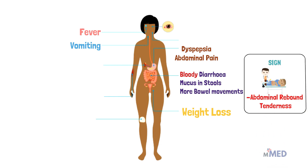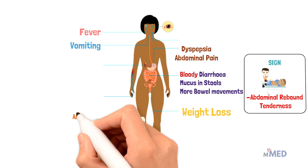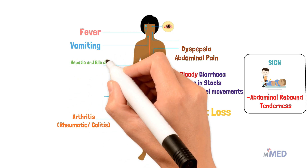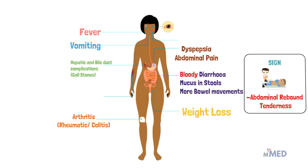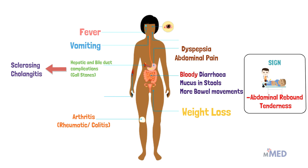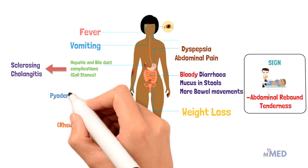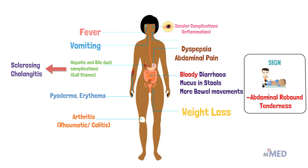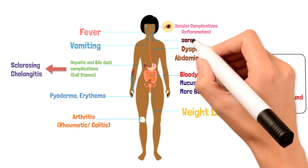Upon examination there will be abdominal rebound tenderness, and in severe cases abdominal wall rigidity. Patients also present with arthritis and hepatic and bile duct complications like gallstones. A unique extra-intestinal manifestation of ulcerative colitis is primary sclerosing cholangitis, an autoimmune disorder of intra- and extra-hepatic biliary ducts. Skin findings include pyoderma and erythema, and ocular complications like conjunctivitis and mouth ulcers can also occur.